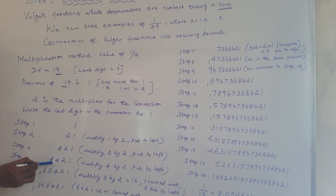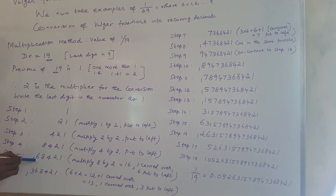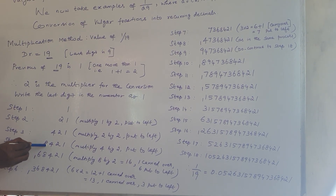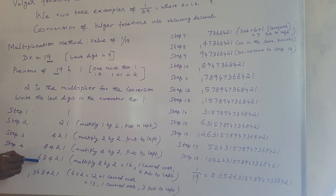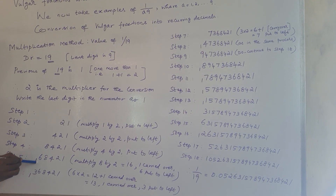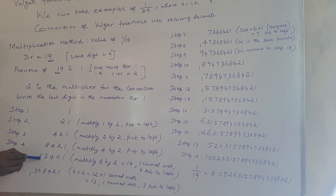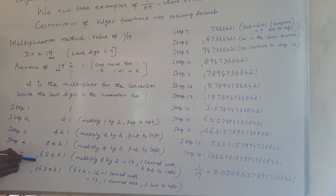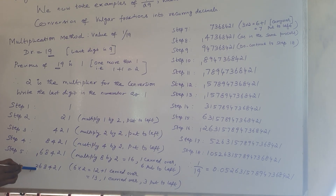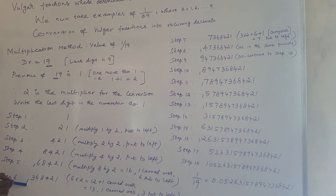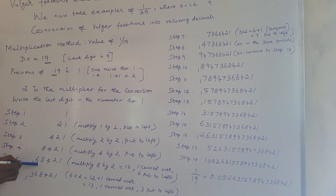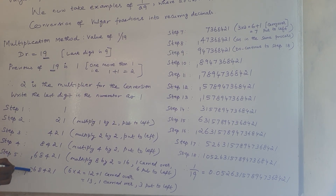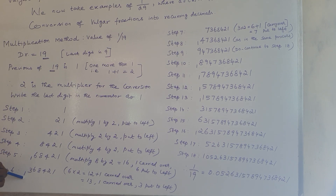In step 5, 8 times 2 is 16 — put 6 to the left and 1 is carried over. In step 6, multiply 6 by 2: 6 times 2 is 12, plus the carry of 1 equals 13. Put 3 to the left and 1 is carried over. So we are multiplying 6 by 2 to get 12, adding the carry of 1 gives 13 — 3 put to the left and 1 is again carried over.